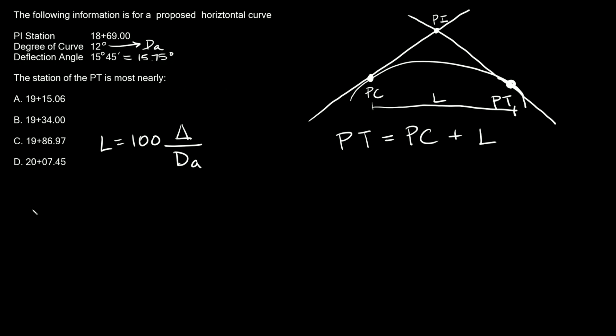So then here we can say that the length is equal to 100 times 15.75 over dA, which is 12, and this is equal to approximately 131.25. So we're going to keep this in our back pocket while we try to figure out PC.